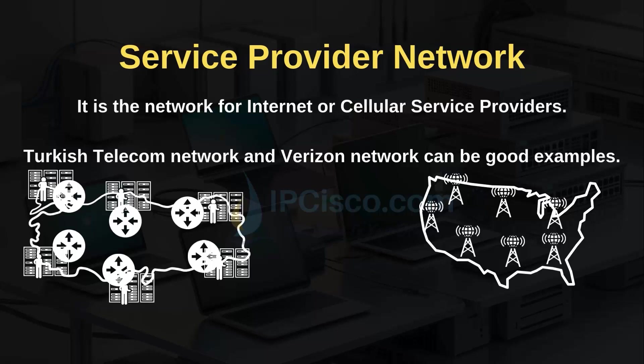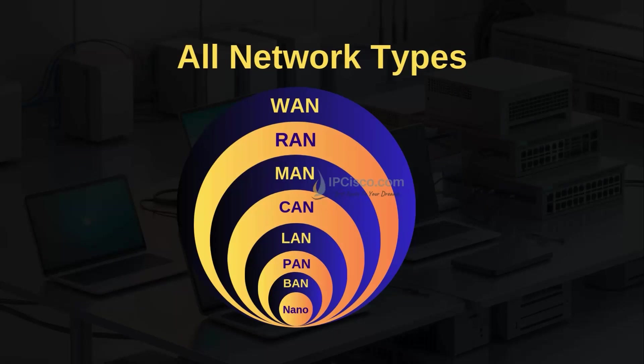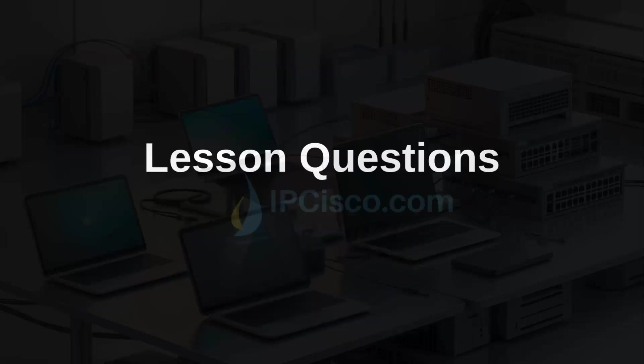In my career I have worked in various service provider and enterprise networks — Turkish Telecom, Alcatel-Lucent, Nokia, Dubai, Vodafone, and Turkcell networks are some of them. Working in such large networks was really amazing. There are also other network types from the smallest to the largest — you can see them on the screen: PAN, BAN, CAN, LAN, MAN, WAN, and Nano. For example, PAN is Personal Area Network and BAN is Body Area Network. We will talk about them in the following lessons.